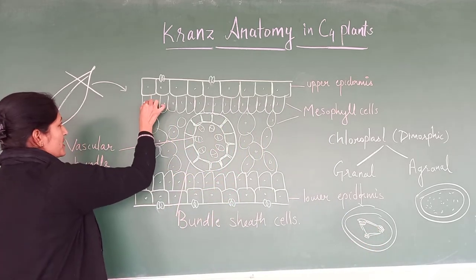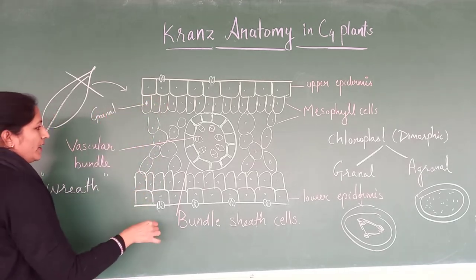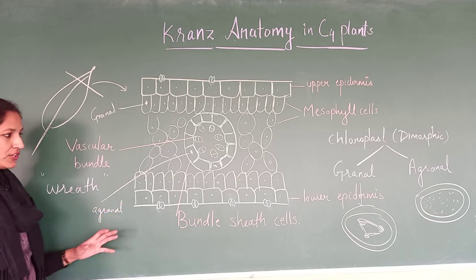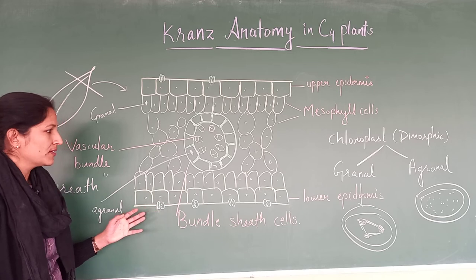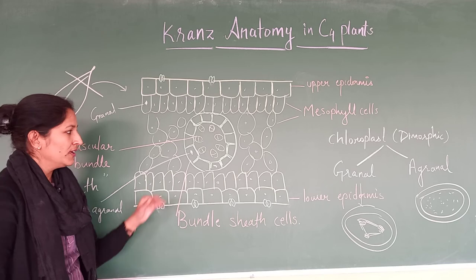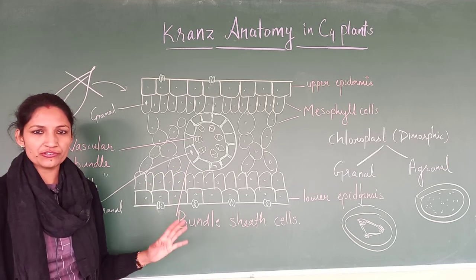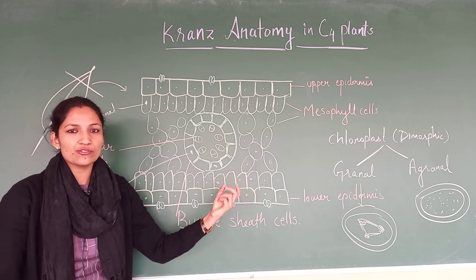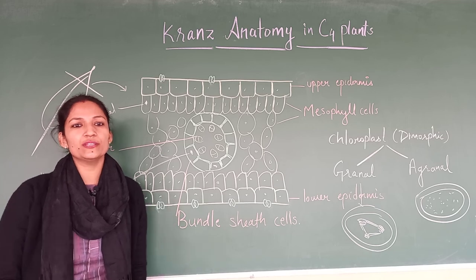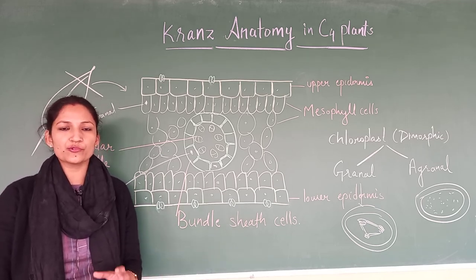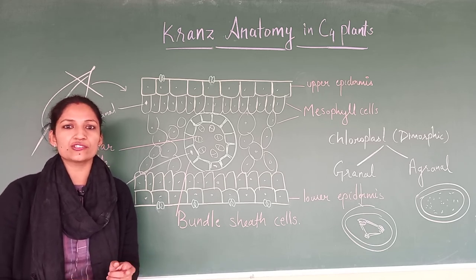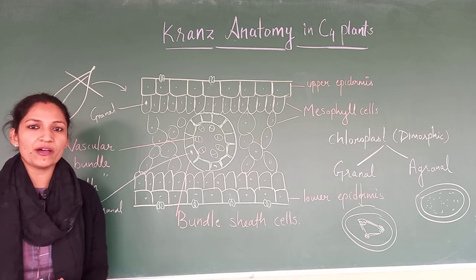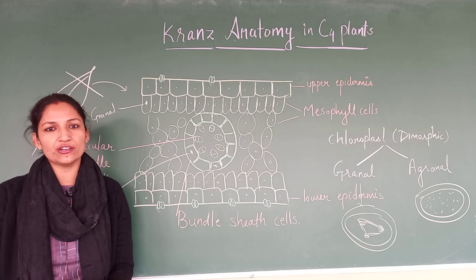The granal chloroplast is present in mesophyll cells, and bundle sheath cells have agranal chloroplasts. Due to this arrangement, there is no photorespiration in bundle sheath cells — because there is no grana, no light reaction takes place and no oxygen is produced. Since there is no oxygen, there will be no competition with CO2 to bind with the enzyme RuBisCO. So there is no hindrance in the process of photosynthesis, as was the case in C3 plants. In this way, these plants are more adaptable and are producing more biomass — their productivity is more compared to that of C3 plants.